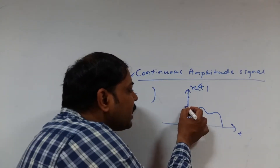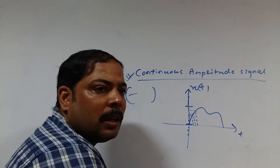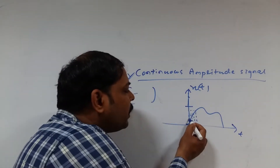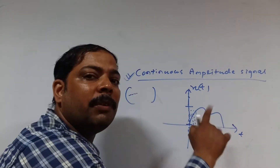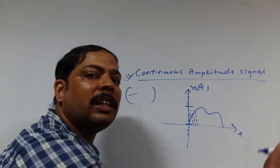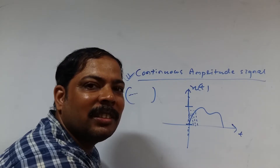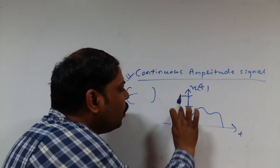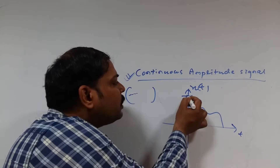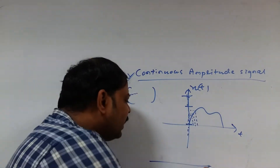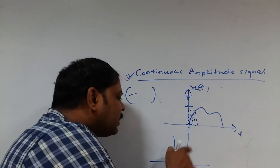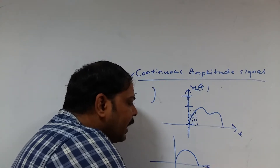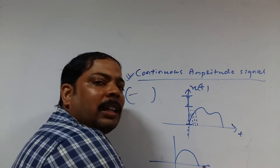Whatever range you just take, within that range whatever amplitude points you have, for every amplitude point you will definitely get an actual time point. Within this range we are getting time points, and within another range we are also getting time points — just like in the case of continuous time. Now after this, when we are taking time points, what are the amplitude values? They can be zero — similar to how in continuous time some amplitude values are zero.